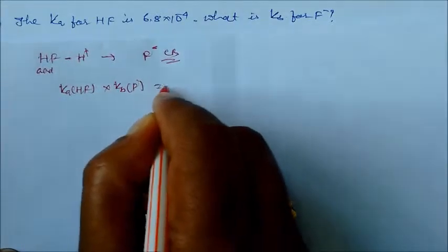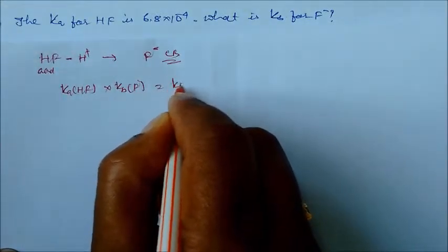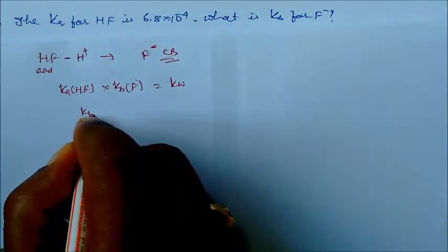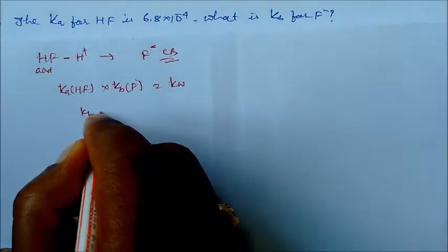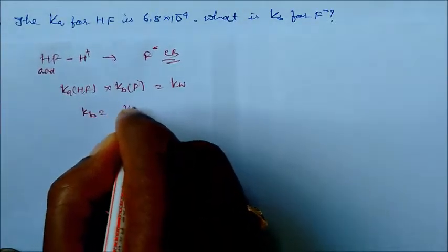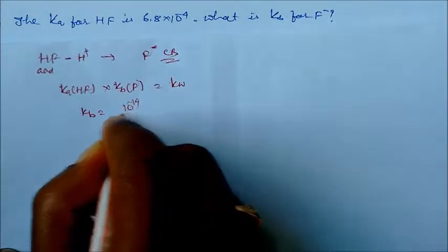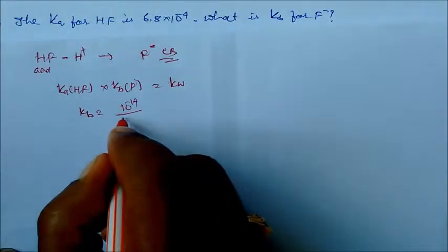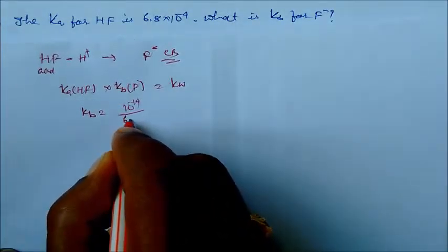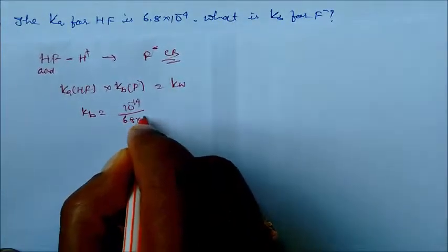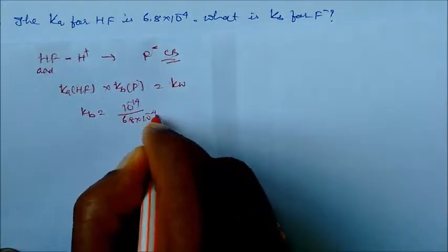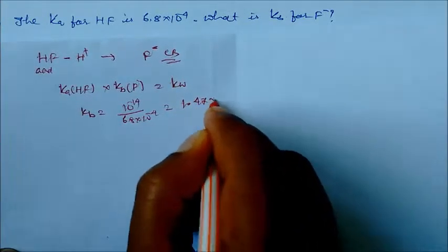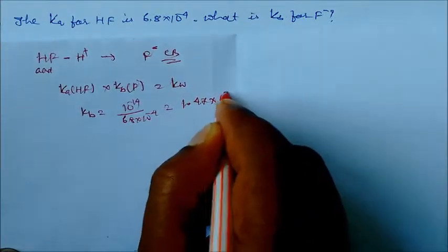We can write Kb = 10⁻¹⁴ divided by Ka. Ka is given as 6.8 × 10⁻⁴. If you solve this, it becomes 1.47 × 10⁻¹¹. This is our answer.